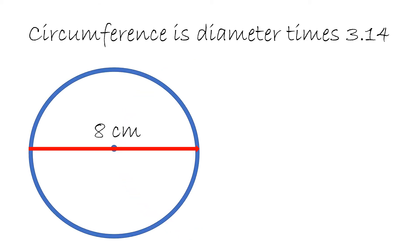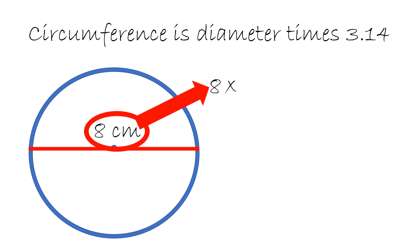Now to find the circumference, we take the diameter times 3.14. So here we have a diameter of 8 centimeters. We take 8 times 3.14 and the answer will be 25.12 centimeters. That is the distance around the circle — circumference.